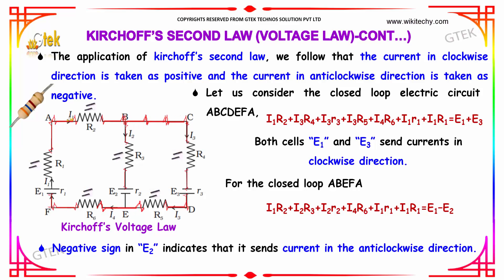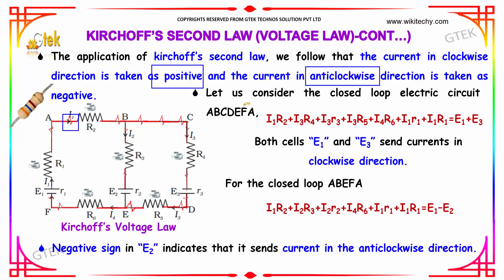In applying Kirchhoff's law to electrical networks, the direction of current flow may be assumed either clockwise or anticlockwise. If the direction is clockwise, it is considered positive; if it is anticlockwise (opposite direction), it is considered negative.